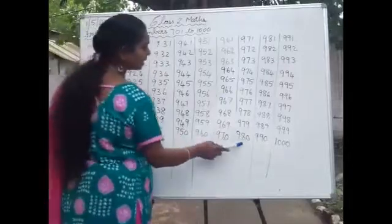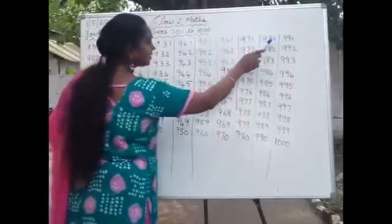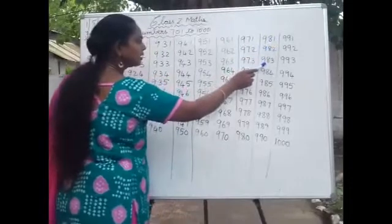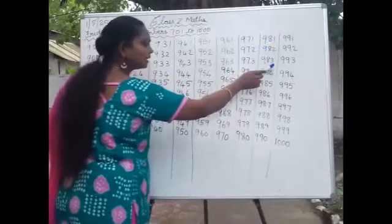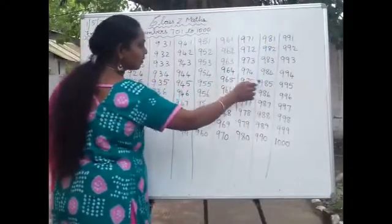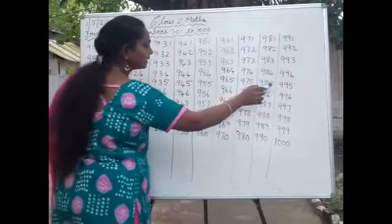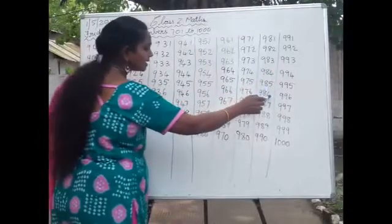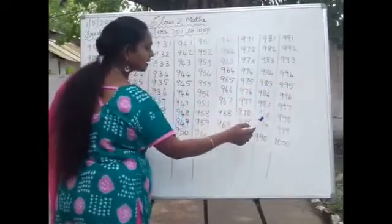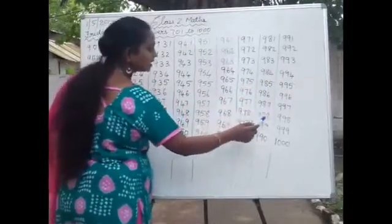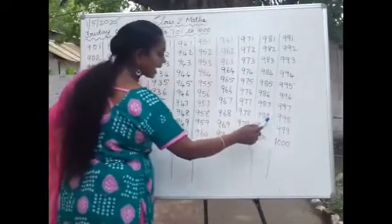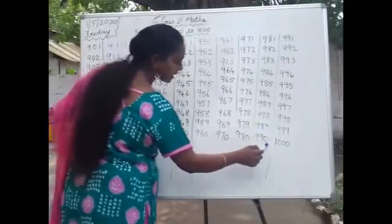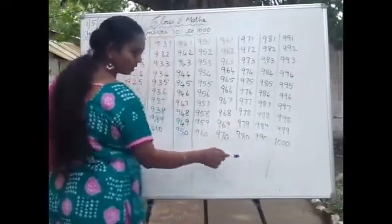After 980: 981, 982, 983, 984, 985, 986, 987, 988, 989, 990.